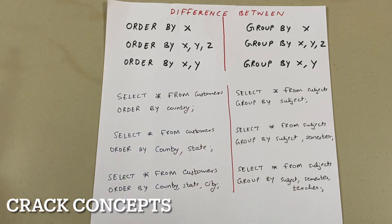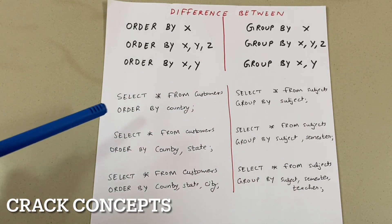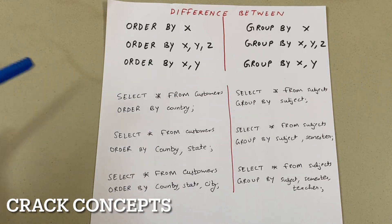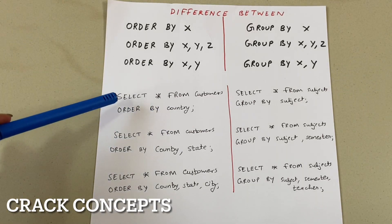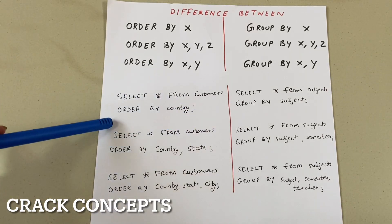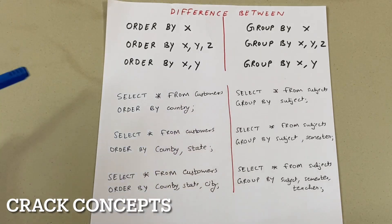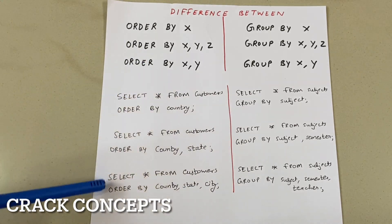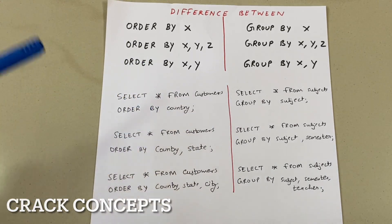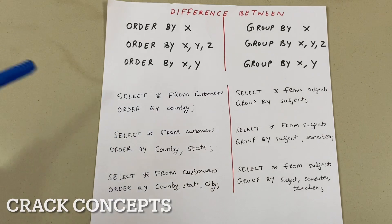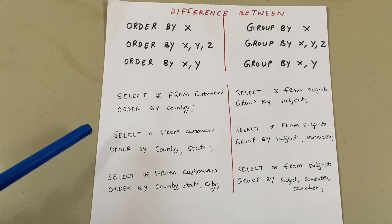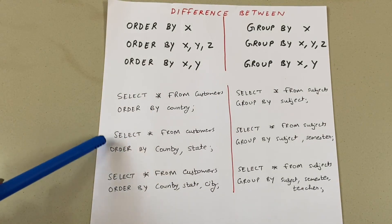When you write ORDER BY with one column name, it will order the results in ascending order of country names. For example: SELECT * FROM customers ORDER BY country — this will sort the output in the order of country.